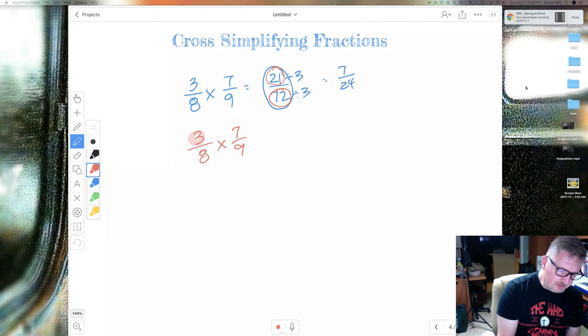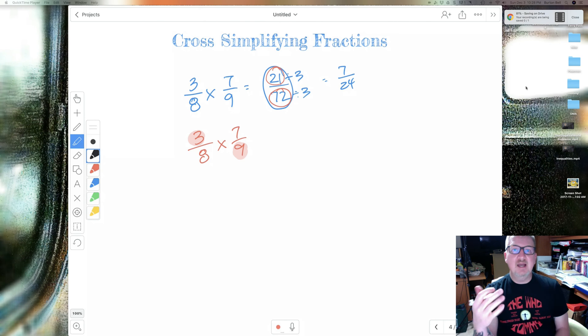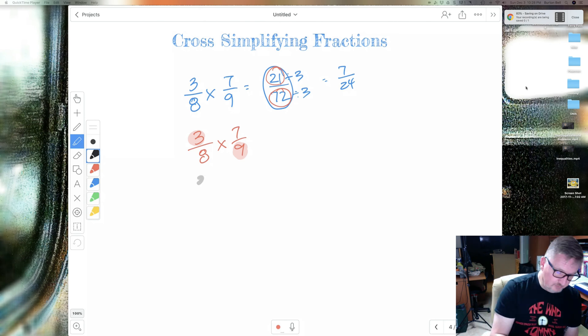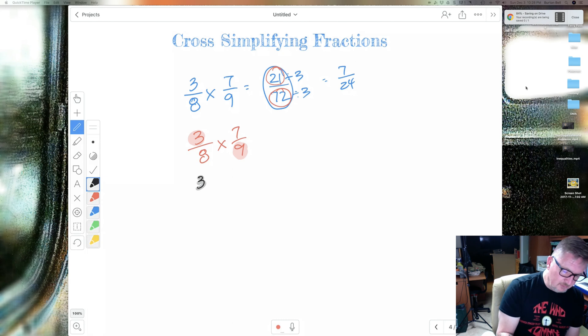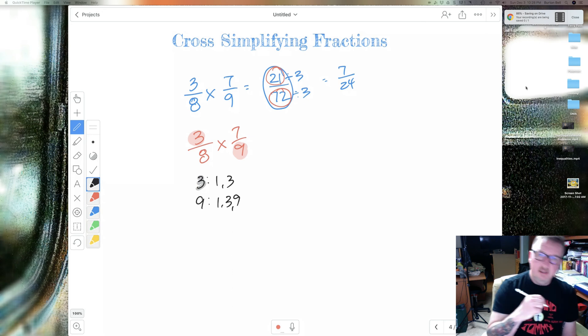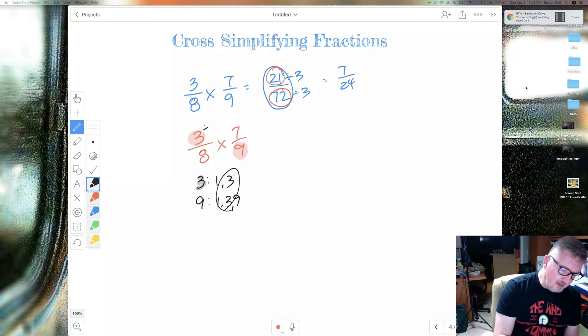I would look at this numerator and this denominator. And I would say to myself, can I simplify 3 and 9? So I can list the factors of each of them. The factors of 3 are 1 and 3. The factors of 9 are 1, 3, and 9. So do they have something in common? Yeah, they got 3 in common. So I can divide both of these by 3.